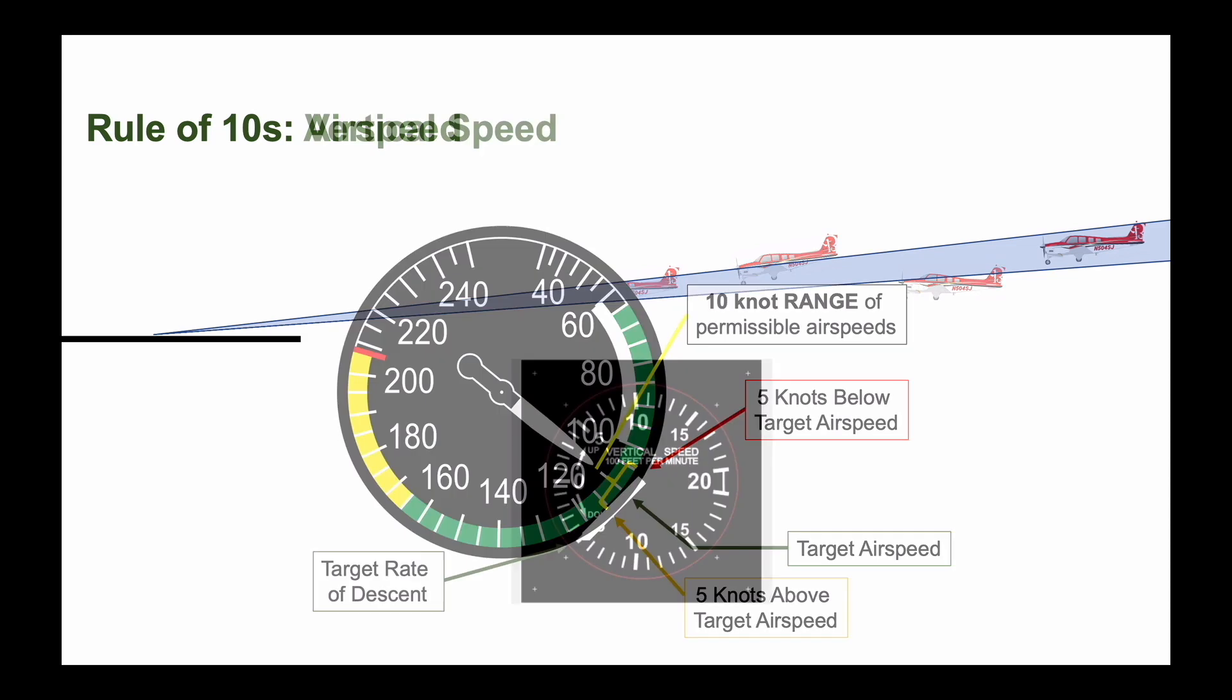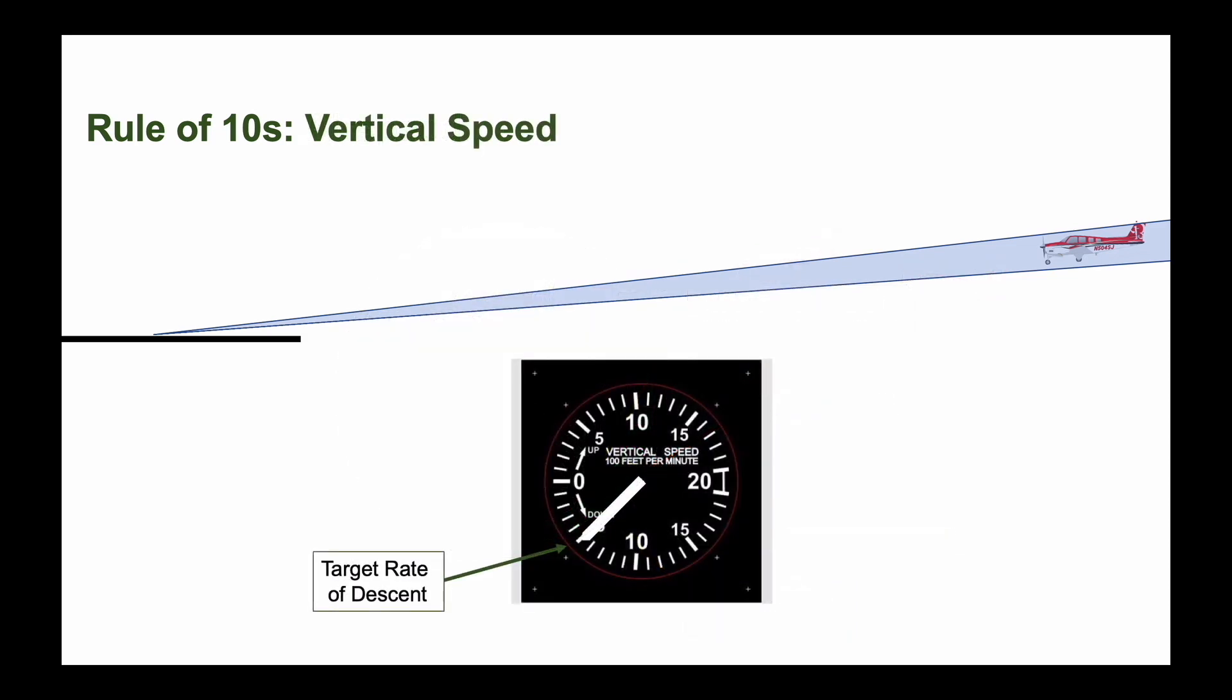Lastly, we have a rule of 10s for vertical speed as well. As we saw before, in most cases the target rate of descent on an approach is 500 to 600 feet per minute.